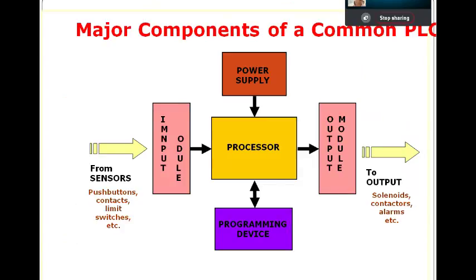If the processor only knows digital, communicating analog to it would be a problem. So the input module converts the analog signal from the field to digital, and sends the digital form to the processor. In the output module, there is again a digital-to-analog conversion, because final control elements operate on analog values like 0–10 volt or 4–20 mA.